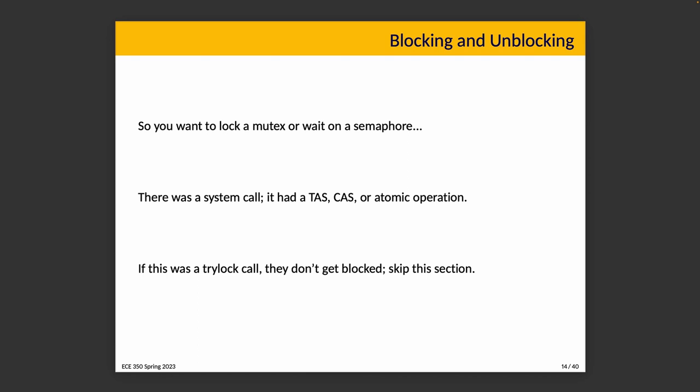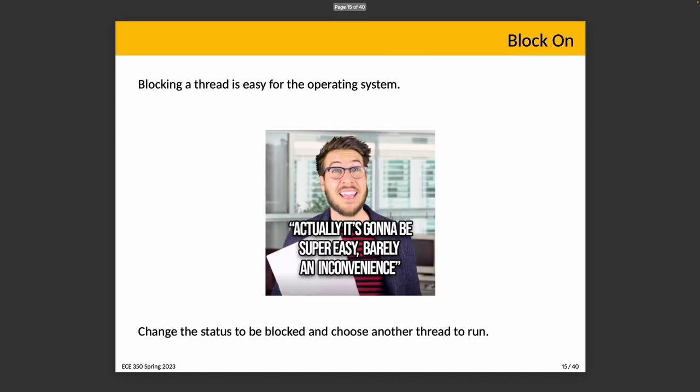We talked about thread state and process state previously, so we know we just need to assign the state. Blocking a thread from the operating system's point of view is actually super easy — barely an inconvenience. We just change the status of that thread to blocked and choose another thread that's ready to run. How we choose the next thread we'll come back to in scheduling.